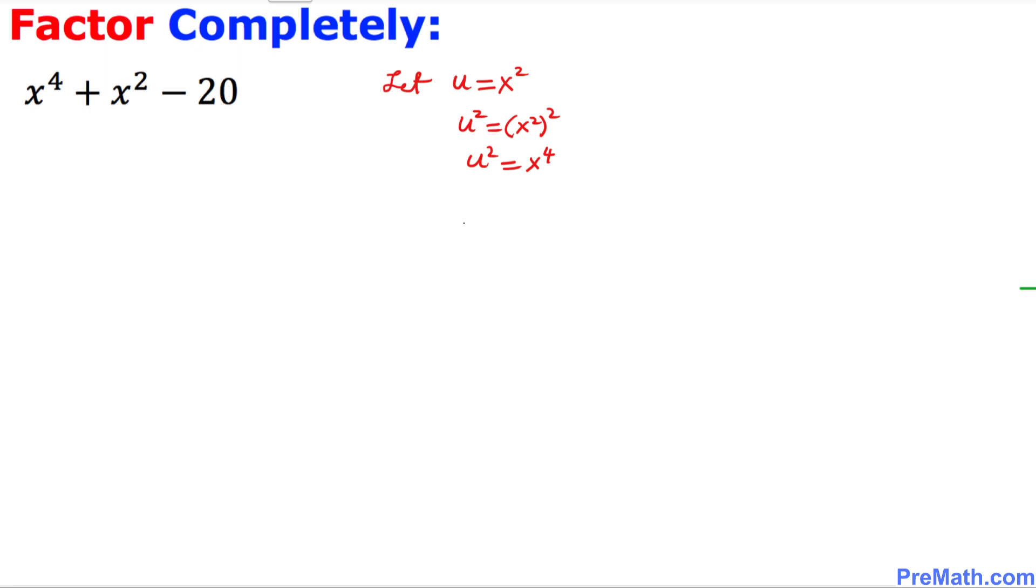So right now, this x to the power 4 could be written as u squared. Plus this x squared could be written as simply u, minus 20. Right now we got a quadratic equation in terms of the variable u that could be easily factored out by simply putting u minus 4 and u plus 5.